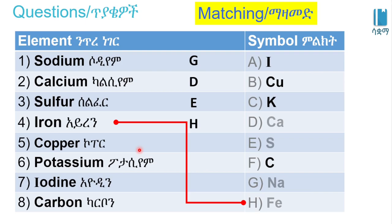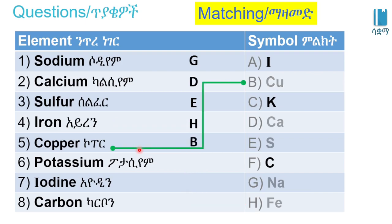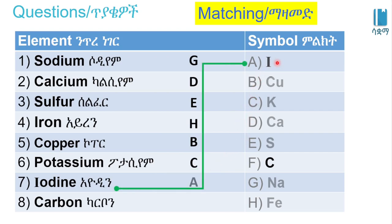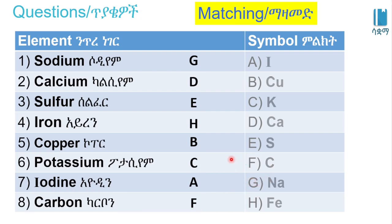Copper — the symbol is Cu. Potassium — the symbol is K. Iodine — the symbol is I. Carbon — the symbol is C. This concludes our lesson on chemical symbols. Thank you.